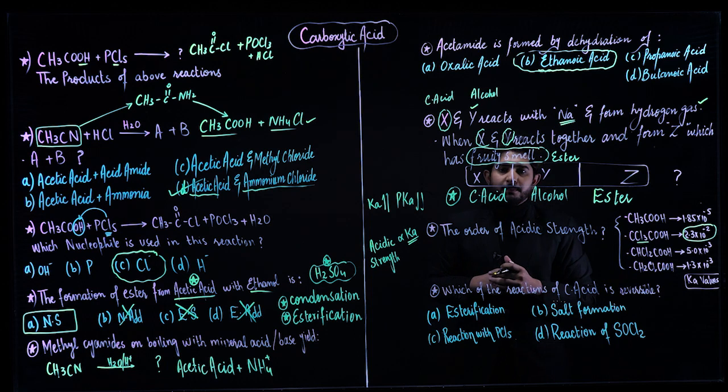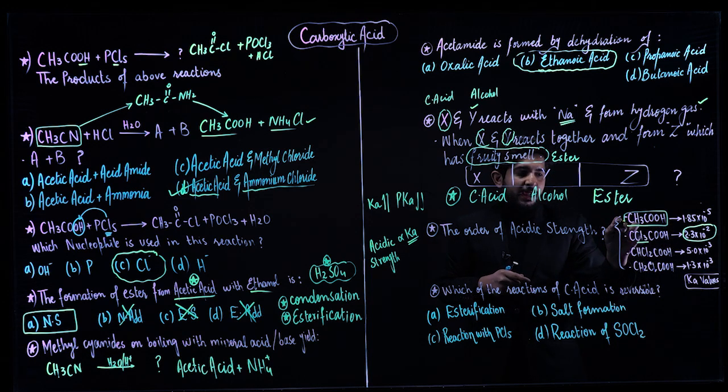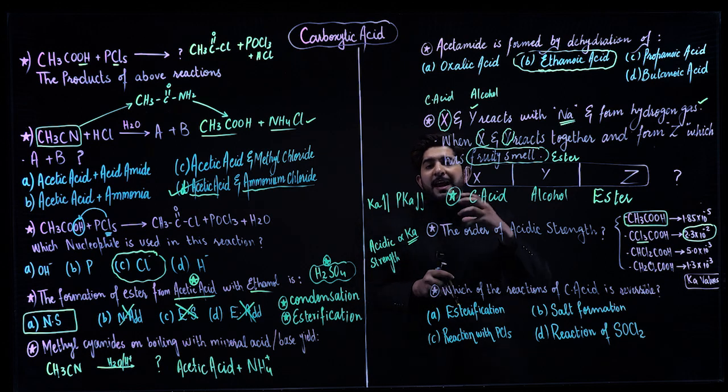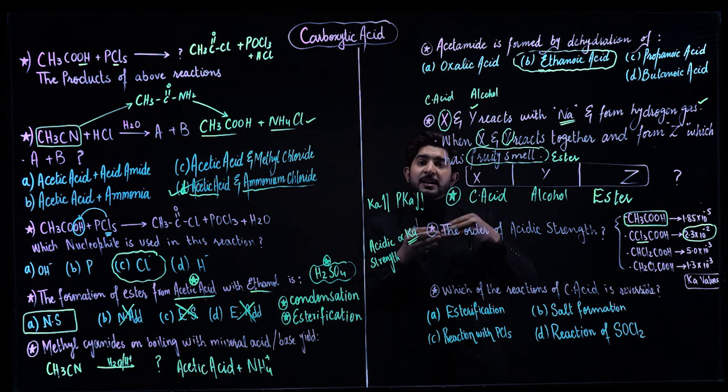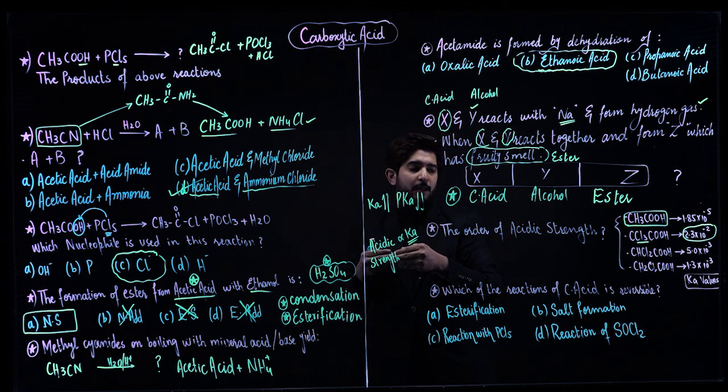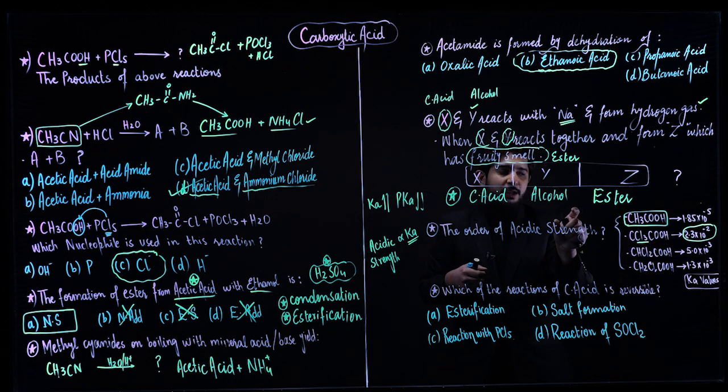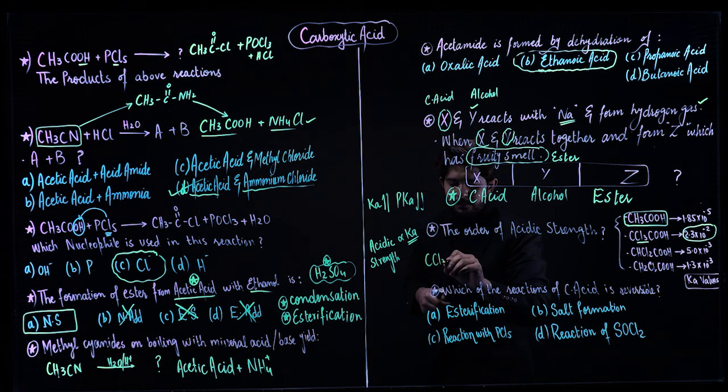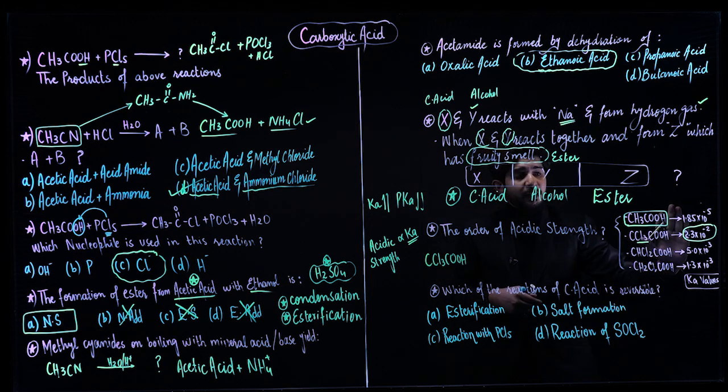The order of acidic strength - whichever has greater Ka value is more acidic. The smallest value here is in negative, so it has greater Ka value. All these are derivatives of ethanoic acid where one hydrogen is replaced with Cl. The more Cl groups that replace hydrogen, the stronger the anion becomes. The stronger the acid's anion, the more acidic character it has.